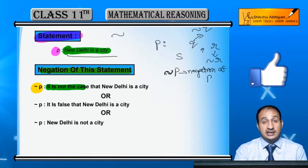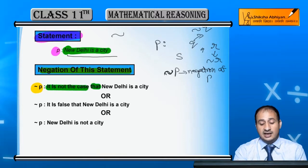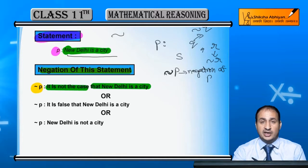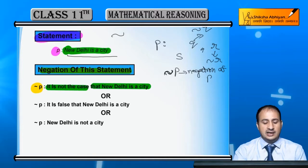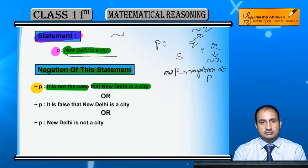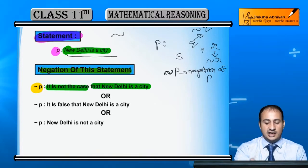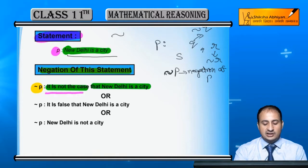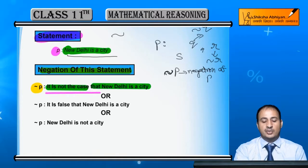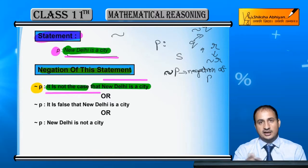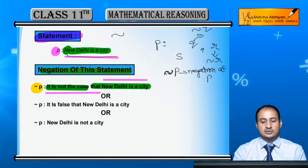Negation of P - it is not the case that New Delhi is a city. Yeh case nahi hai ki New Delhi is a city. Pehla method toh yeh hai ki aap aage 'it is not the case that' jod den, aur baaki as it is statement ko aage likh dijiye. Negation likh ho jayega.